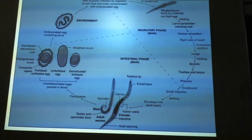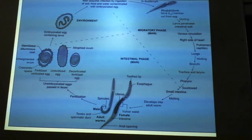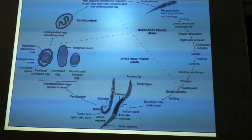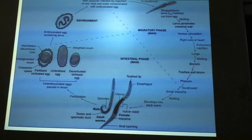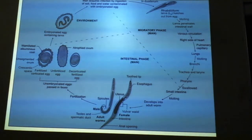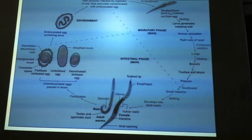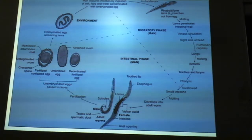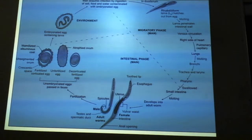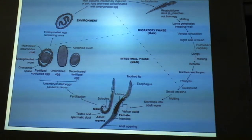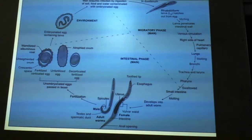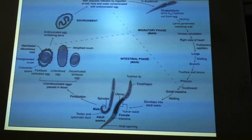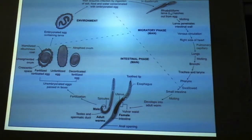Moulting takes place, and the larva penetrates the intestinal wall, enters the venous circulation, and goes to the right side of the heart. Through pulmonary capillaries, it enters the lungs. In the lungs there will be moulting, especially in the bronchus. Then it enters the trachea and larynx, comes out through the pharynx, and goes to the small intestine. So you can see how it travels — from intestine to circulation, then the respiratory system, then back to the digestive system.